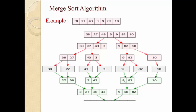Likewise, 9 will be compared with 10 first. Since 9 is minimum, 9 will be inserted first, and then the index for this part — let's say index I — will be increased by 1. Then 82 will be compared with 10, so 10 is minimum and 10 will be inserted. Then the last element, 82, will be inserted. So we get 9, 10, and 82.